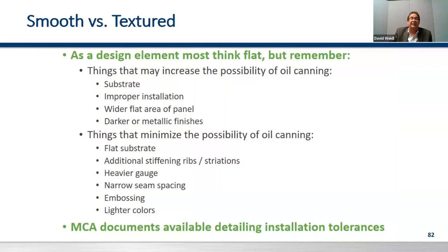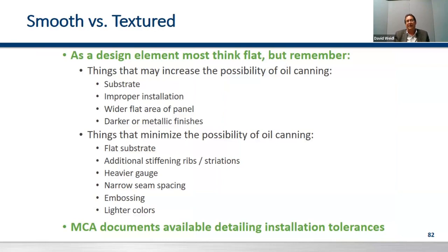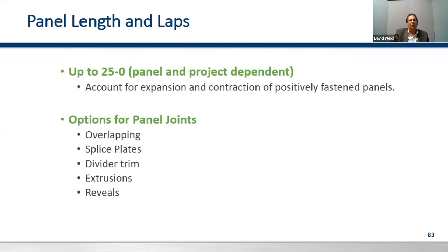To minimize oil canning: make sure your substrate is flat, add stiffening ribs, go with heavier gauge, use a narrower seam, use embossing. There are installation tolerances published on the MCA's website and on ATAS's website as well. This needs to be discussed and the expectation set early in design — taking a 24-gauge, 0.032 panel, 16 inches wide, flat, and spanning it over a concrete wall with a wood subframe is going to look like a wave on the ocean.